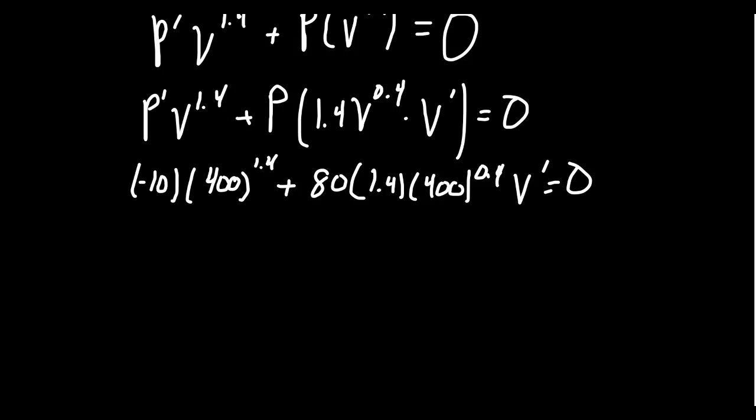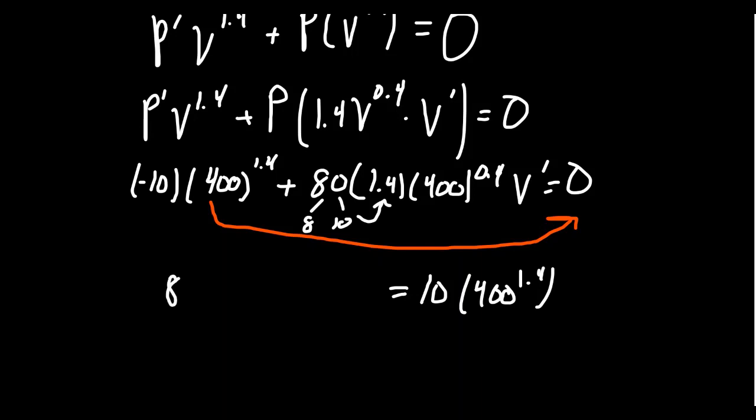We have negative 10 times 400 to the 1.4. So when we move to the other side of the equation, it will become positive. So we get positive 10 times 400 to the 1.4 power. What's left on the left-hand side, notice that 80 could be factored as 8 times 10. The reason that's advantageous is if you times 10 by 1.4, you actually get 14. So you get 8 times 14. That way you can avoid the fractions.